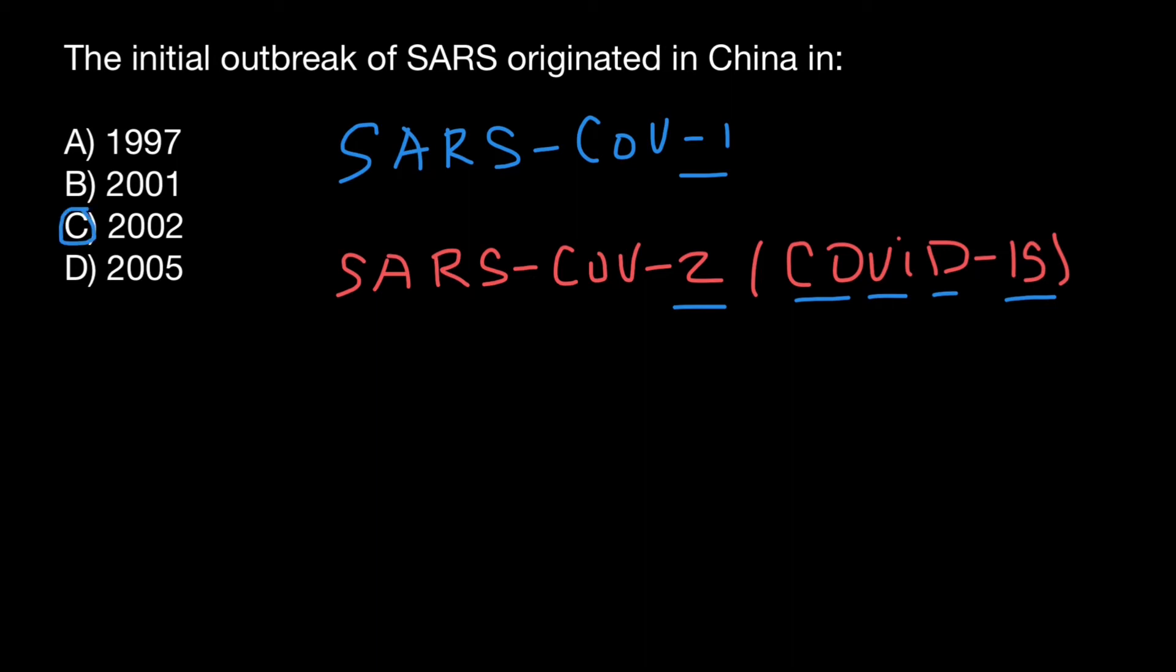Over 8,000 people from 29 different countries and territories were infected and at least 774 died worldwide. Can you imagine what consequences we can get if this strain of the virus would spread just like COVID-19? As you see, about 10% of the people who got this strain of virus died.